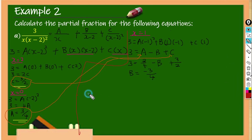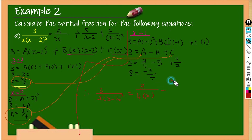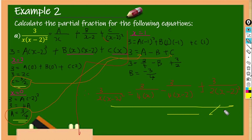Therefore, 3 over x times x minus 2 squared equals 3 over 4x, minus 3 over 4 times x minus 2, plus 3 over 2 times x minus 2 squared. This is our final answer.